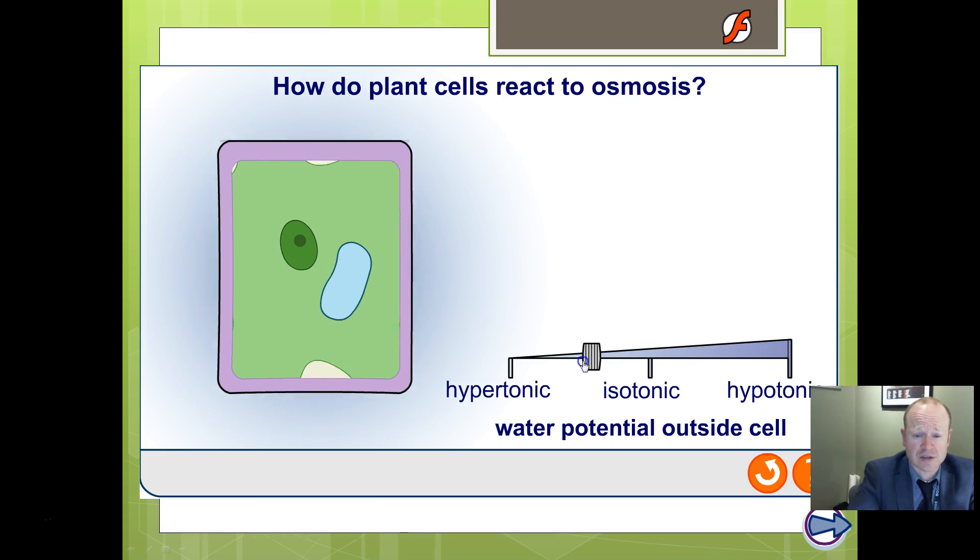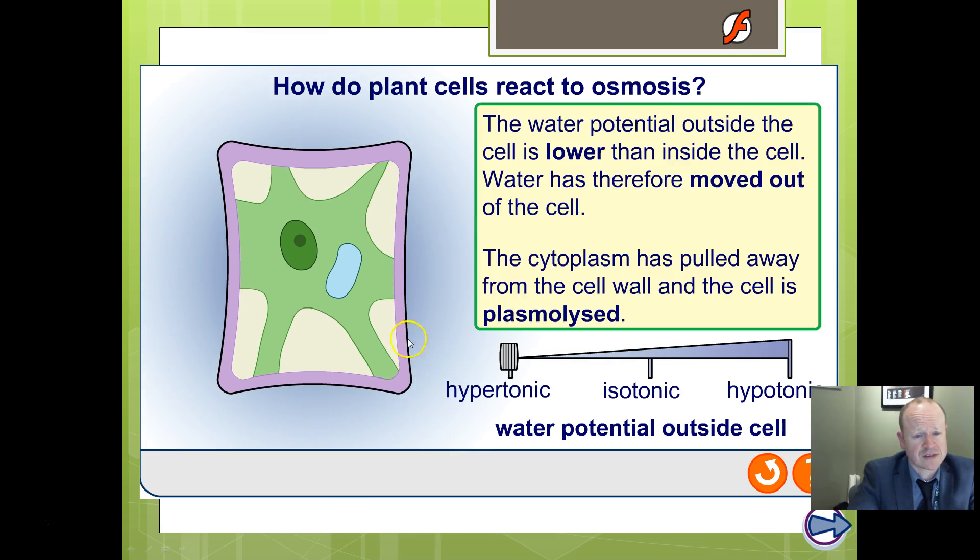If you put it in a hypertonic solution, notice what happens. The cytoplasm pulls away from the cell membrane. That's because the water potential outside is lower than the inside, so water tends to move out. In other words, this is a very salty solution, so the water is trying to move out to diffuse towards the salt because it's continuing to move with its concentration gradient. The cytoplasm pulls away from the cell wall. We call that plasmolysis. That's become plasmolyzed. The cytoplasm has pulled away. So plasm, plasmolysis, plasmolyzed.